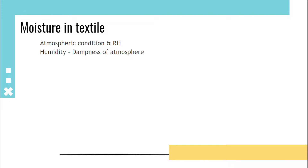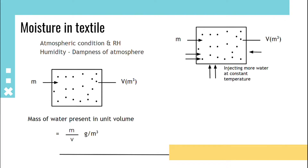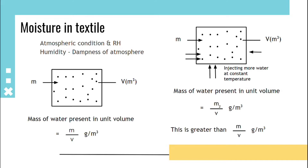Consider a closed space having a unit volume and mass of water present will be m. So mass of water present in unit volume will be represented as m/v in gram per meter cube. In the same condition, if we are injecting more water at a constant temperature, mass of water present in unit volume will be m2/v in gram per meter cube, which will be greater than m/v.